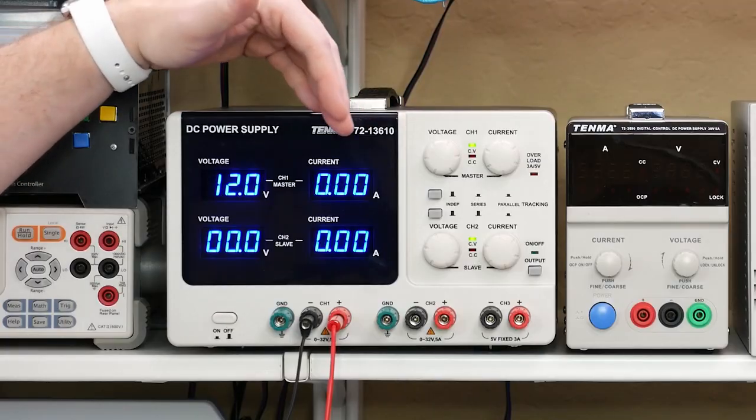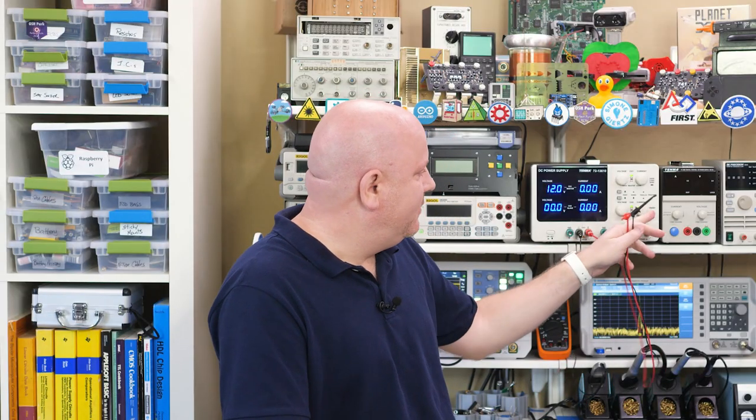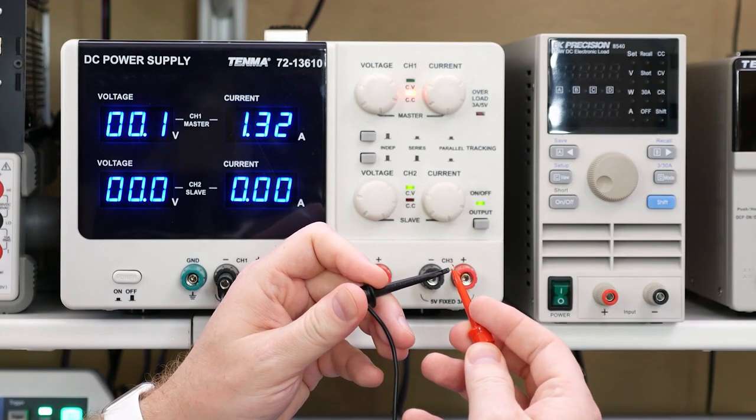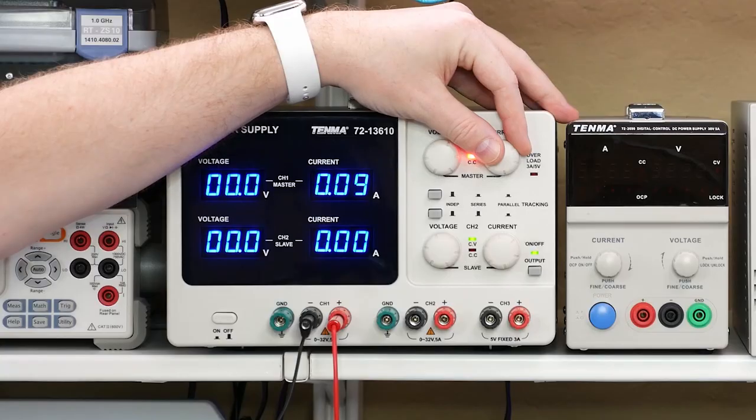Well these meters measure what is coming out of the power supply and right now it's turned off. If I turn it on still it's going to be zero because there's nothing connected. The way we set the current limit is by shorting the leads together. Now I can dial in a nice safe 100 milliamps.